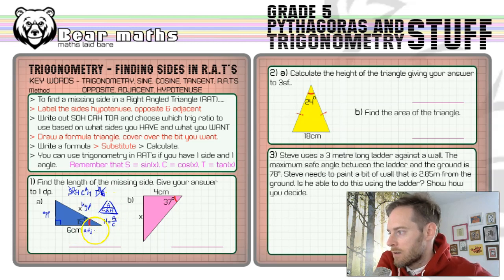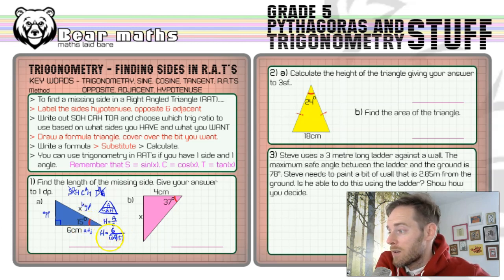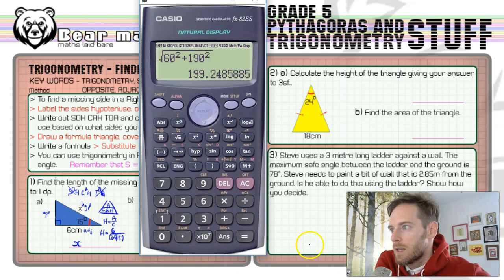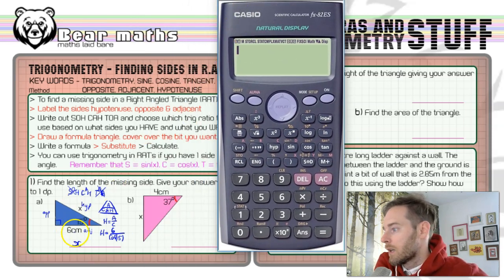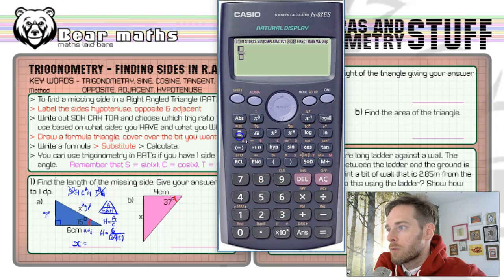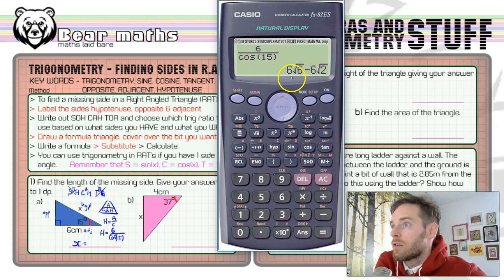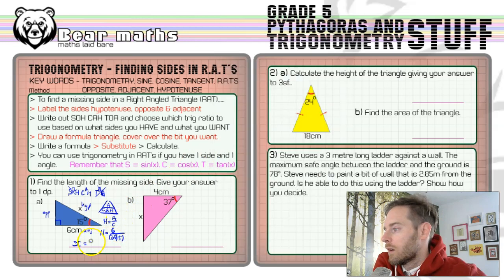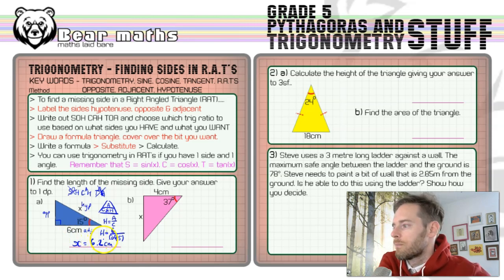A is the adjacent side, which is 6. So H equals 6 divided by cos of 15 — the angle given in the question is 15 degrees. That calculation gives us H straight away — the hypotenuse length. X in our question is the H side. Type it into the calculator: 6 over cos(15). The answer to one decimal place is 6.2, and that would be in centimetres.